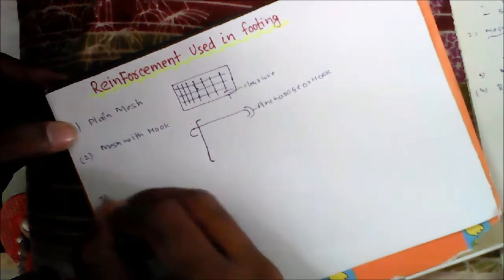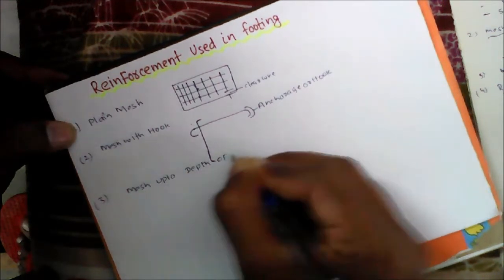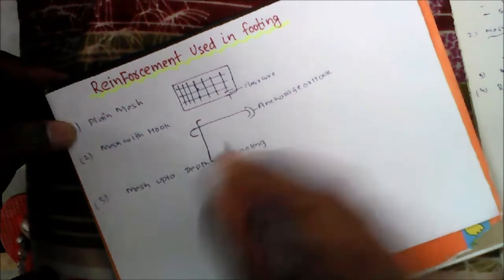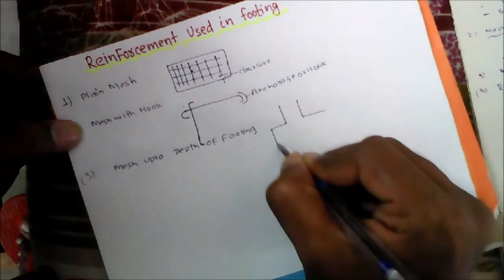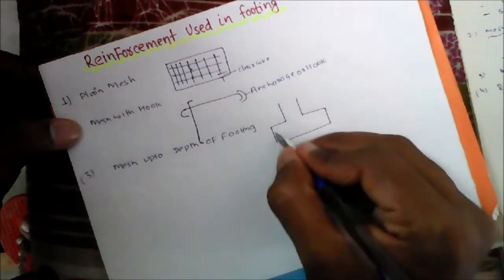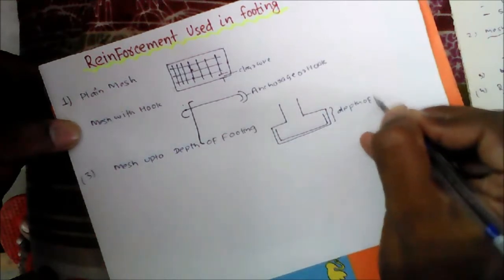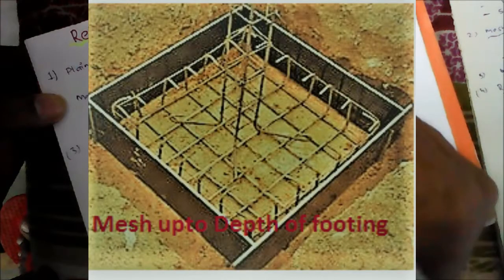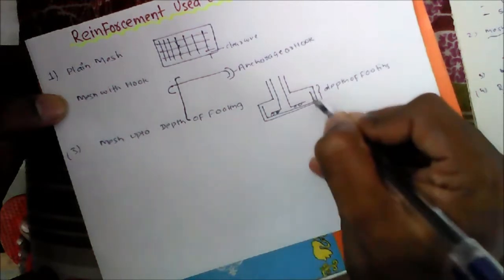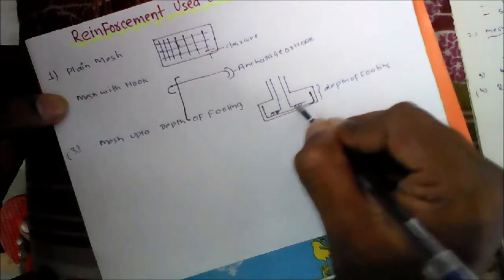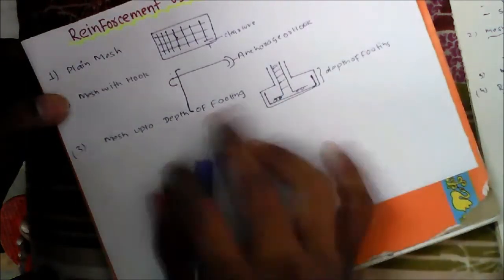The third type is mesh up to depth of footing. If you see the cross section, the mesh goes up to the depth of the footing. The main bar is provided, and another bar is also provided in the y direction while this bar is in the x direction, with spacing provided.